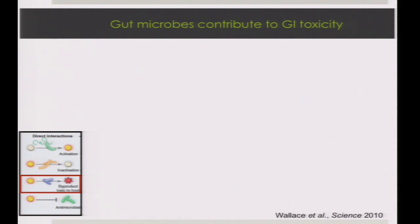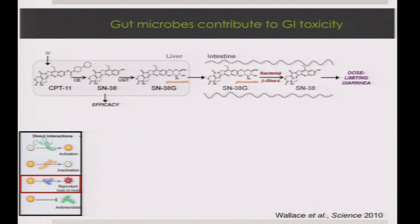Another famous example, touched on yesterday, is work by Matthew Redinbo at UNC on the drug irinotecan, or CPT-11, used for cancer. It has a ridiculously complicated route through the body: administered by IV in an inactive form, activated by carboxylesterases to SN-38, then inactivated in the liver by glucuronidation, and released back into the intestine. That's where it gets interesting: bacterial beta-glucuronidases can reactivate the drug at a site where you don't want it, contributing to the dose-limiting side effect of diarrhea.